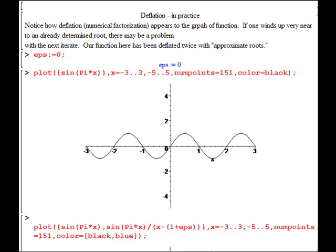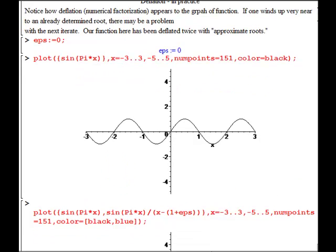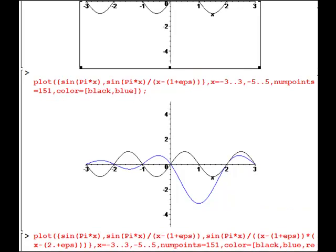What we have is a plot here, and we're looking at the sine of pi x, which has zeros at the integers. What we're going to do now, note that epsilon is zero here. We'll bring that up in a minute. We're going to look at the graph of the sine pi x, and then divide by x minus 1, effectively removing that root right there at one.